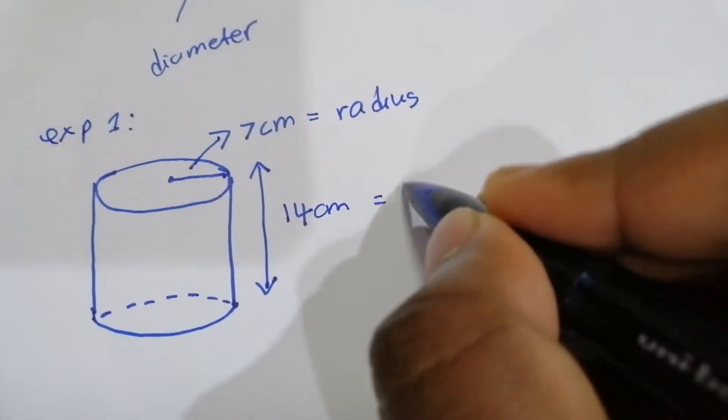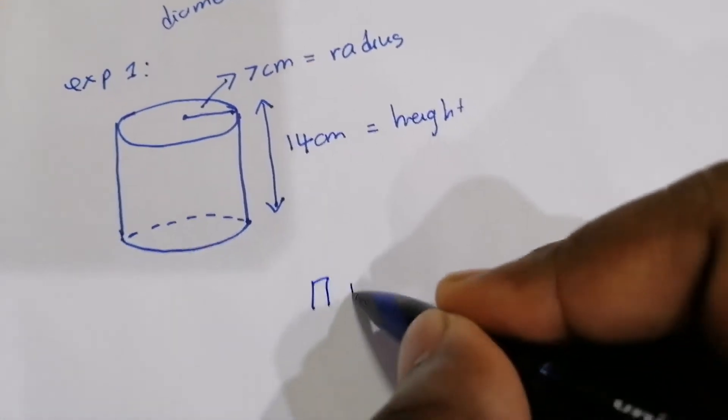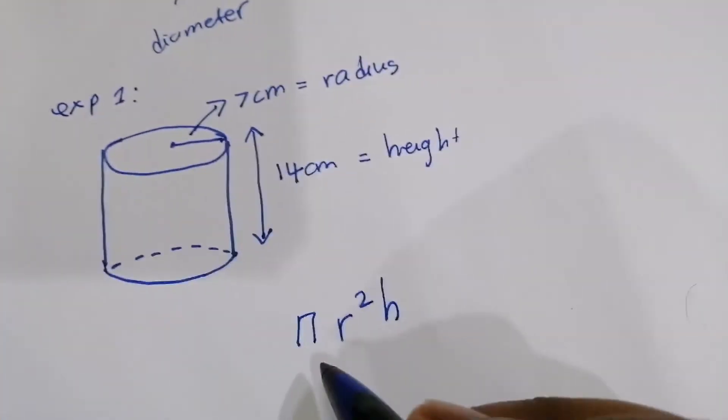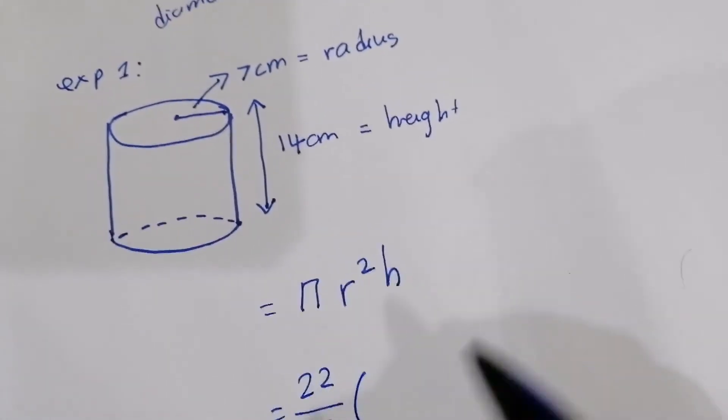14 cm is the height. So now the formula is π r² h, and we just substitute the values.